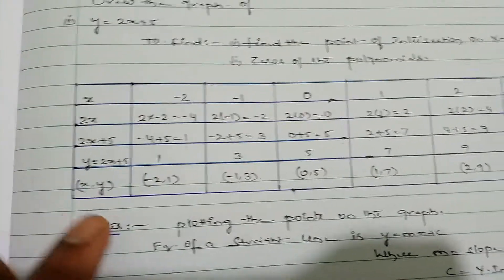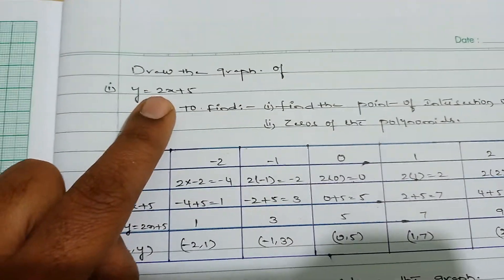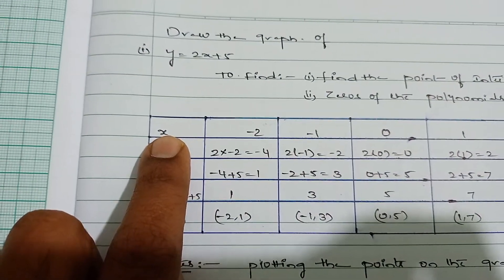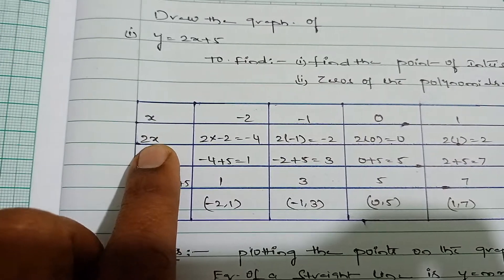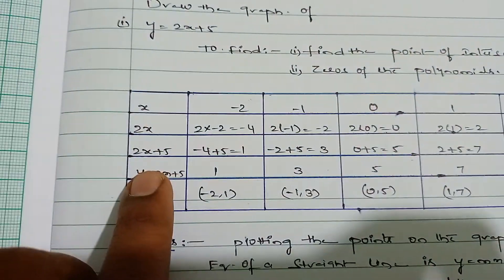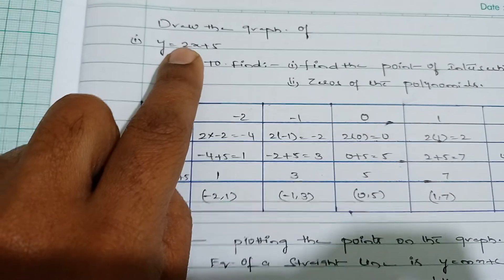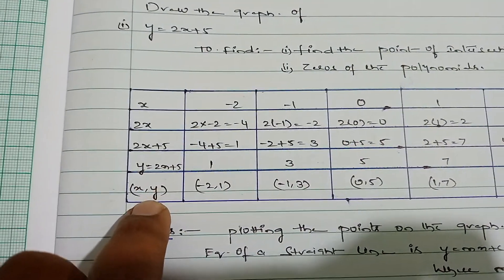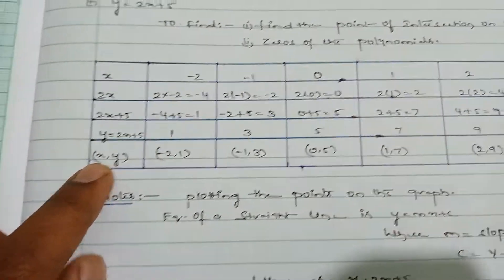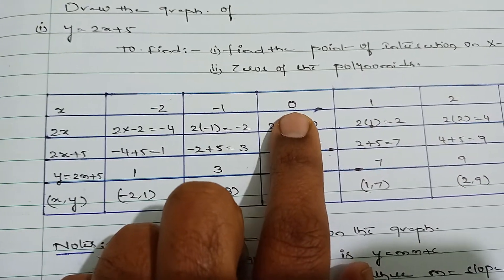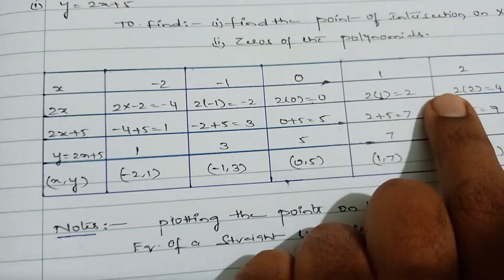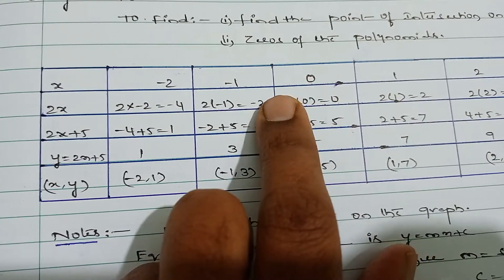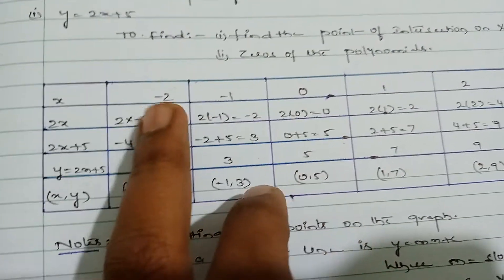To make the tabular form, x is the variable and y is also a variable. My suggestion is to take five values: zero in the middle, two negative numbers, and two positive numbers. So take x values: −2, −1, 0, 1, 2. Then compute 2x and 2x + 5 for each.